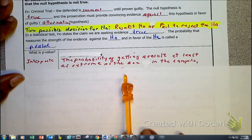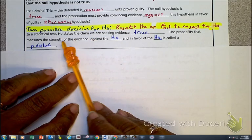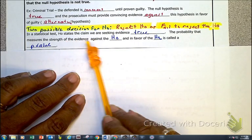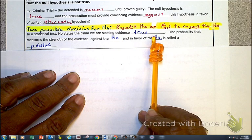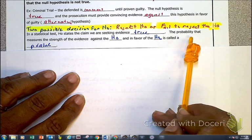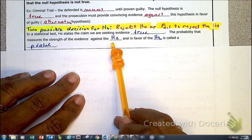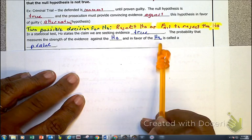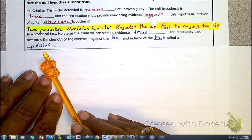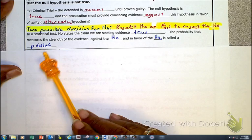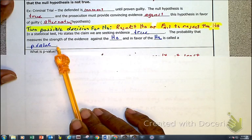And as we look at the idea, well, here's the interpretation of the p-value, but I also want to slide back up here. In our statistics test, the HO states that the claim we are seeking, there's evidence, is true. So there's evidence to support it. But the probability of the strength against the evidence against the HO and in favor of the HA is called the p-value.